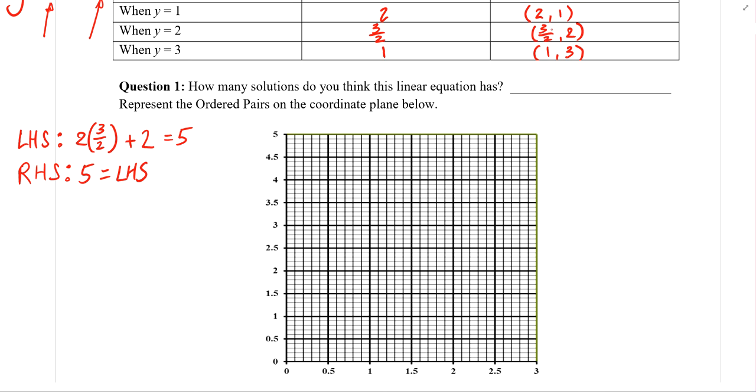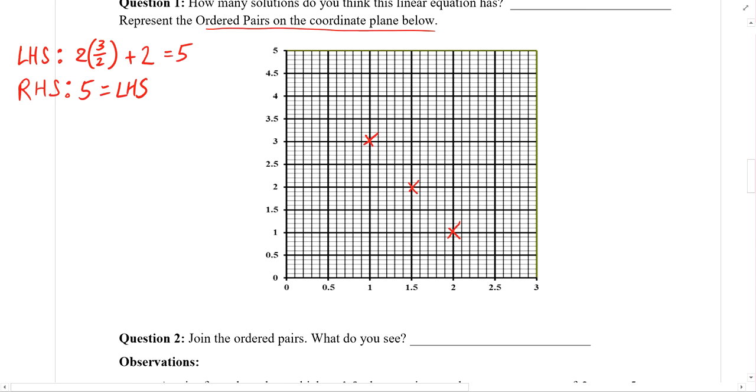So let us start with 2, 1 first. So 2 is over here and 1. So this is a point. Mark it with a cross. Next point, 3 over 2, which is 1 and a half, comma 2. So 1 and a half over here, comma 2. This is my next point. Finally, the third point, when x is equals to 1, y is equals to 3. So now I have represented the ordered pairs on the coordinate planes below with these little crosses.